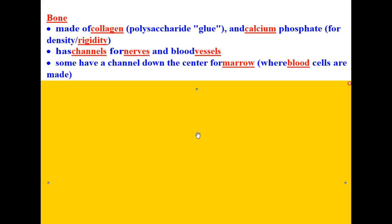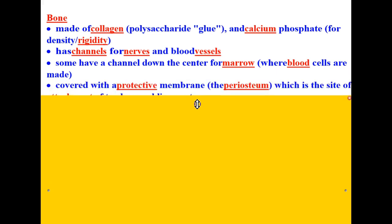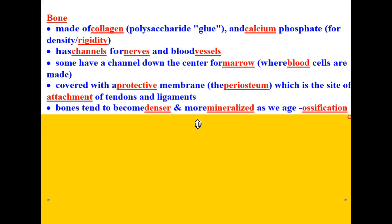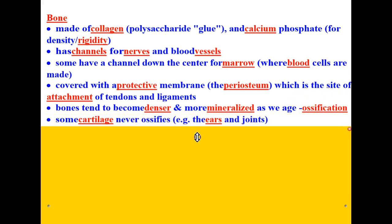A lot of people have the misconception that your bones are dead — that's not true, though it's what remains after you're dead. Your bones are very much alive. They're covered with a protective membrane called the periosteum, which is the site of attachment for tendons and ligaments. Bones tend to become denser and more mineralized as we age — that natural process is called ossification. Some cartilage never ossifies, for example, the cartilage in your ears and in many of your joints.